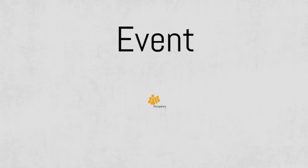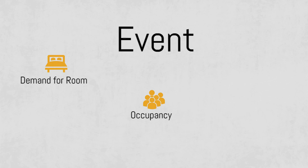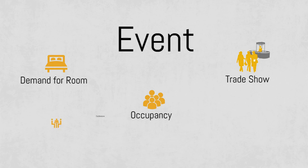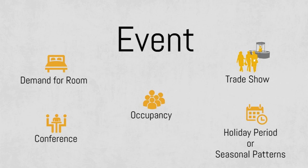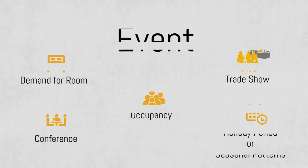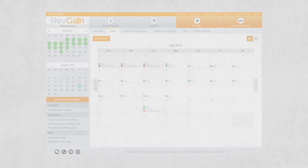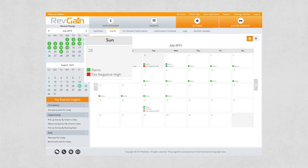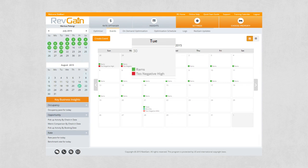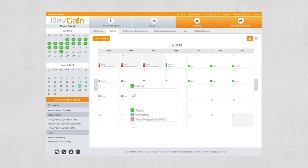An event can be anything that impacts your occupancy or the demand for rooms. Maybe there's a trade show nearby or a conference at your property. Maybe you want to track holiday periods or seasonal patterns. However you want to use events, the setup is easy and flexible and Revgain's optimization algorithm instantly adjusts to take account of the higher or lower demand.